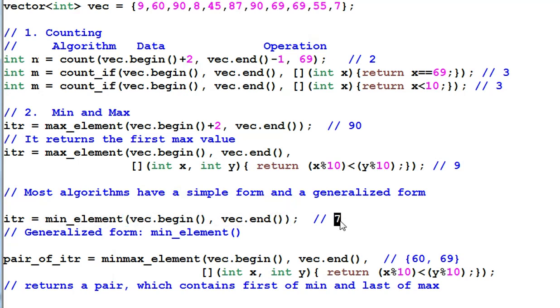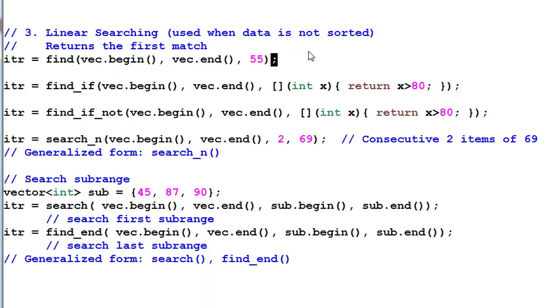Mean element finds the first smallest element in this data range. And it will find 7. Mean element also has a generalized form with the same name. Mean max element returns a pair of iterator which points to the first smallest element and the last biggest element. Note, the first smallest element is the same result as the mean element would return. But the last biggest element is not the same result as the max element would return. Because max element returns the first biggest element. And here I only show you a generalized form of mean max element. It also has a simplified form which uses the default comparison function of less than.